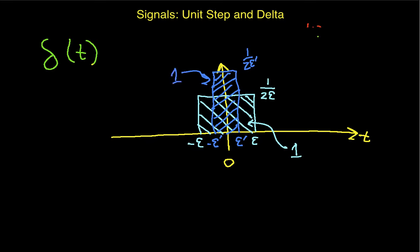Now suppose I keep doing this, so I keep choosing smaller values of epsilon. My rectangle keeps getting narrower and taller. But the area, the way I'm constructing this, the area stays 1.